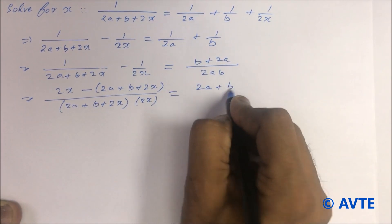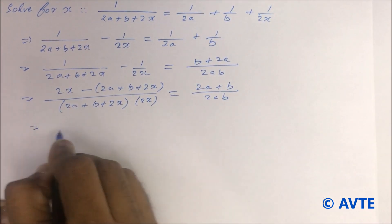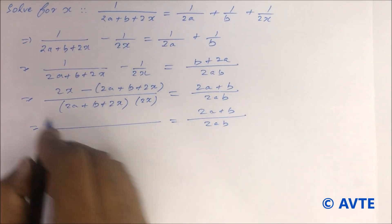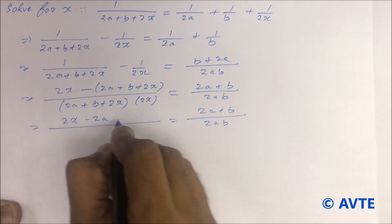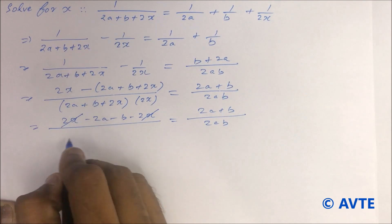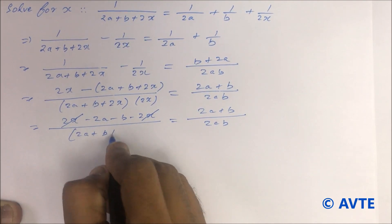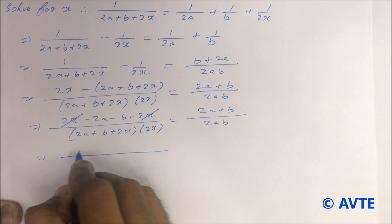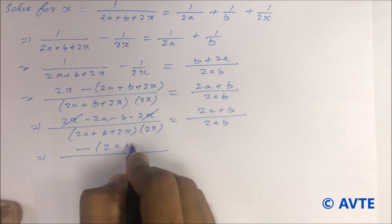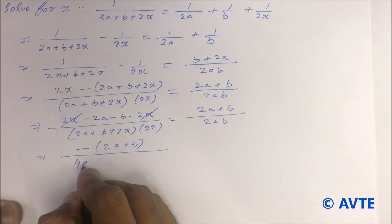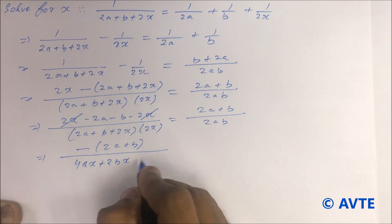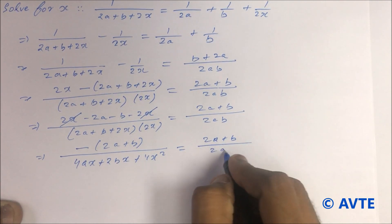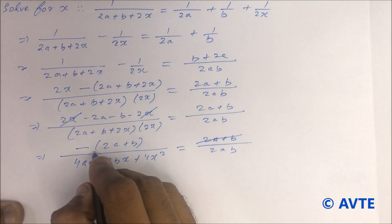So the left side becomes 2a plus b upon 2ab. When you open the numerator, 2x minus 2a minus b minus 2x, you get the denominator 2a plus b plus 2x into 2x. In the numerator you have minus 2a plus b, and expanding gives 4ax plus 2bx plus 4x squared equal to 2a plus b times 2ab. Since 2a plus b appears on both sides, you can cancel it.